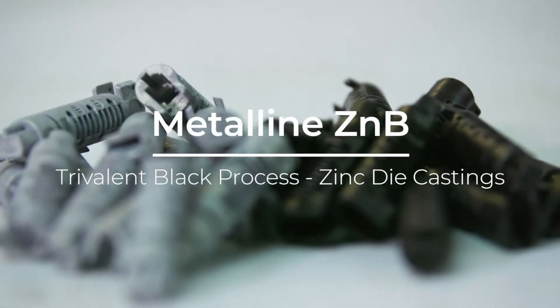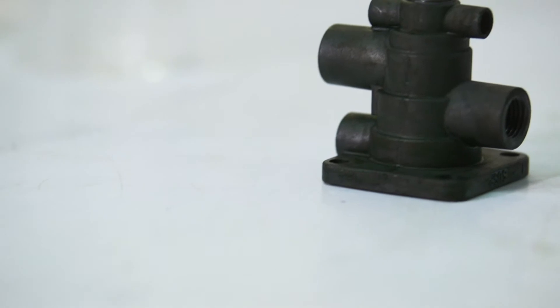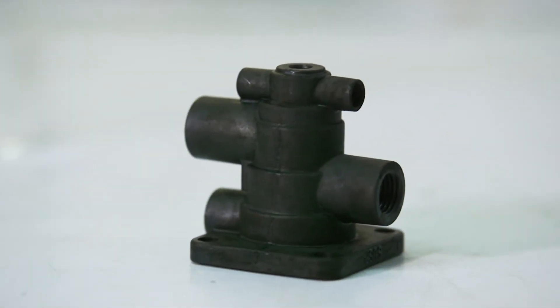The MetaLine ZMB Trivalent Black Chromate process will produce a glossy, deep black conversion coating on clean and active zinc die-cast surfaces.